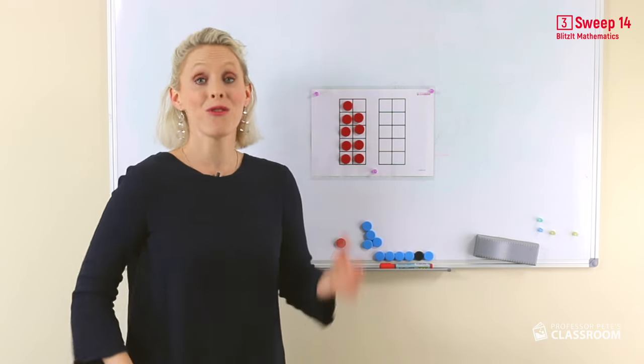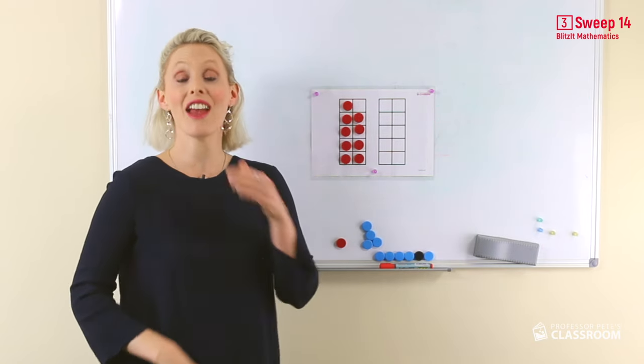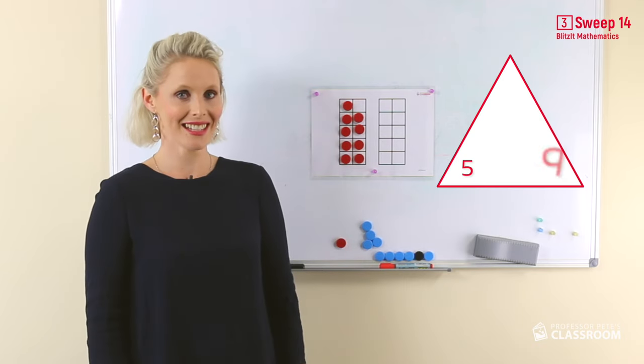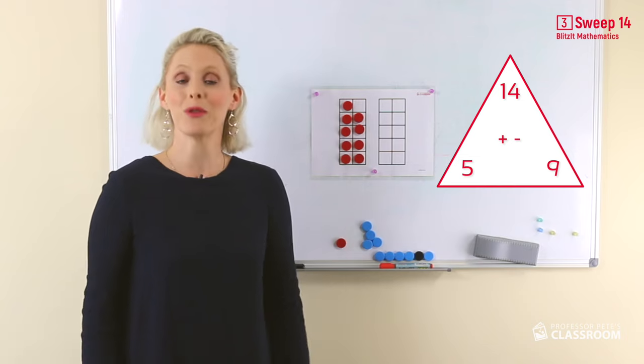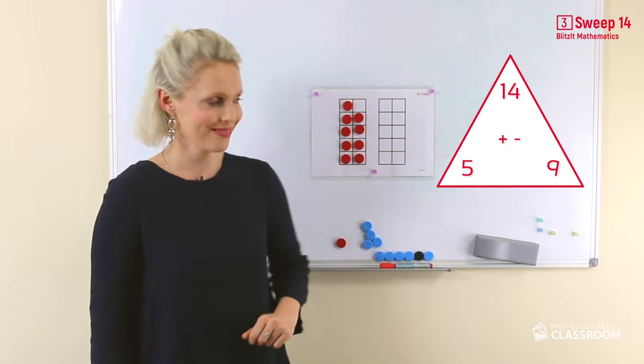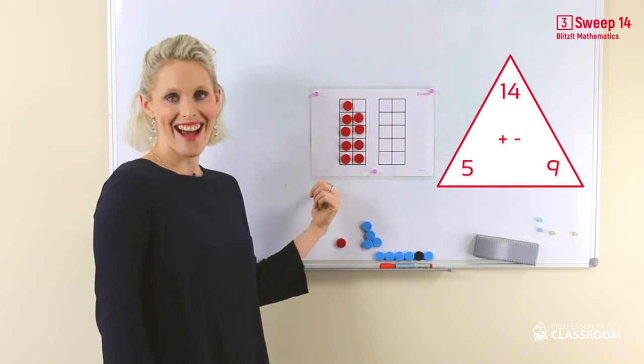So 14, 9, and 5 are linked. 14 take away 9 equals 5. And 14 take away 5 equals, that's it, 9.